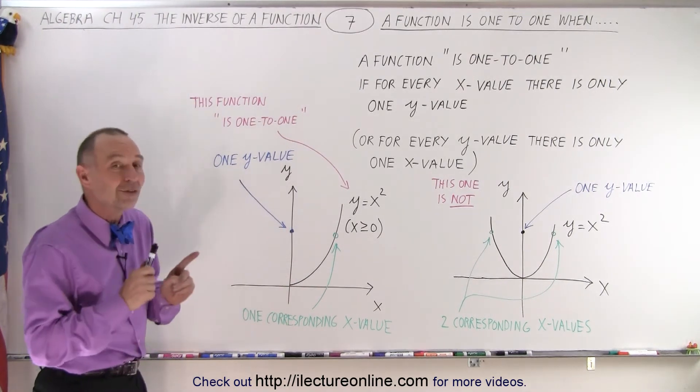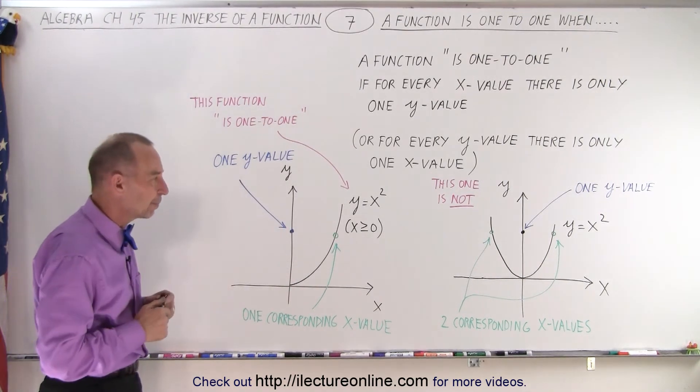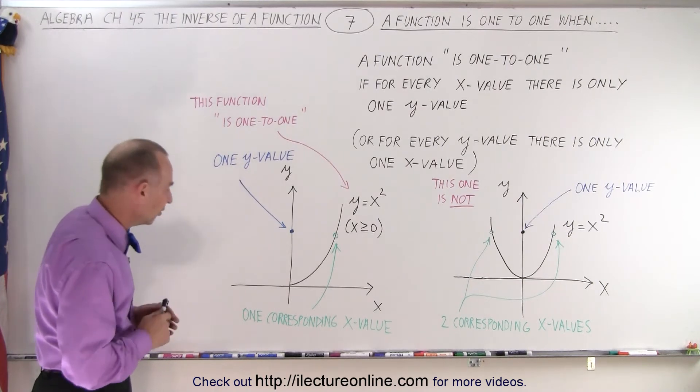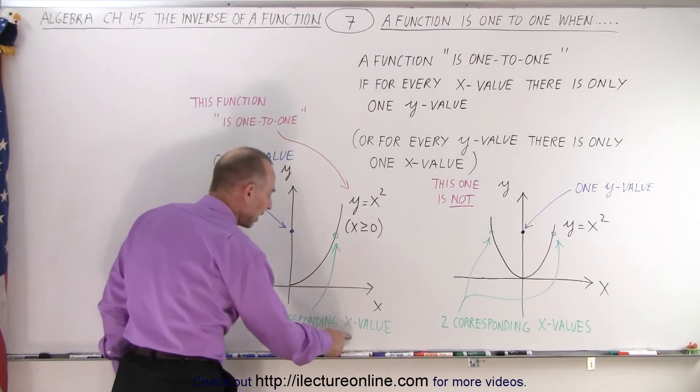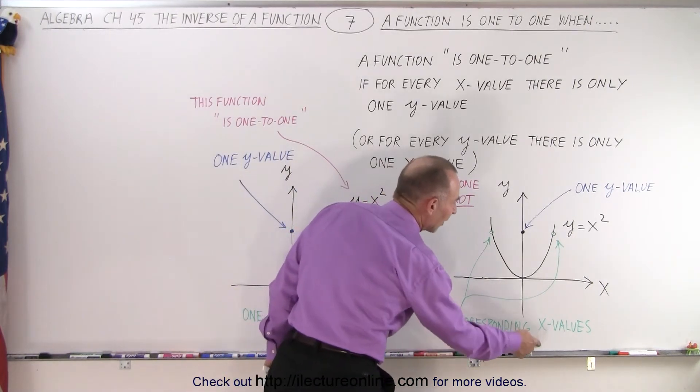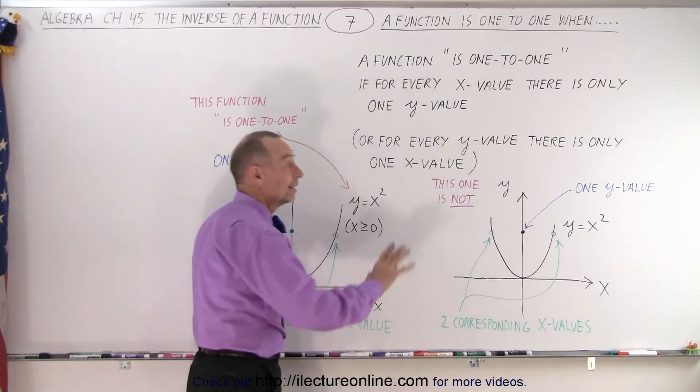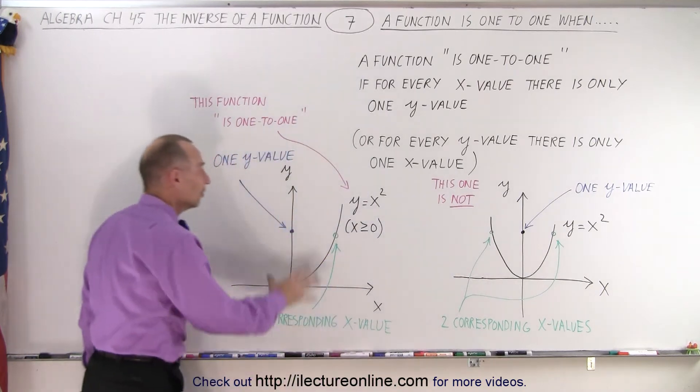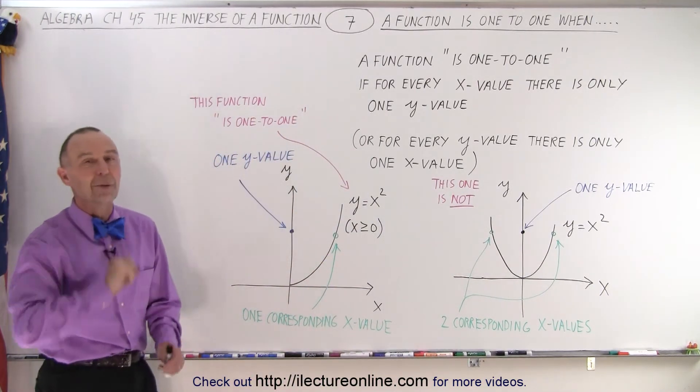But there's a special reason why we want to look at this concept. So here again, the difference is there's only one corresponding x value for a particular y value. Here, there are two corresponding x values for a particular y value. This is not one-to-one. This is one-to-one. And that is how we tell the difference.